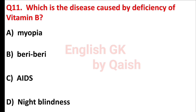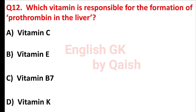Which is the disease caused by deficiency of vitamin B? Answer is option B, beriberi. Which vitamin is responsible for the formation of prothrombin in the liver? Answer is option D, vitamin K.